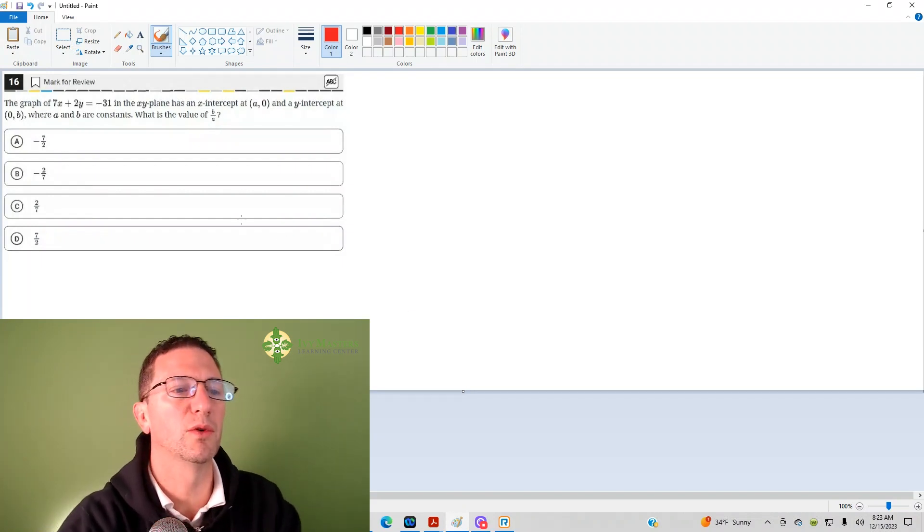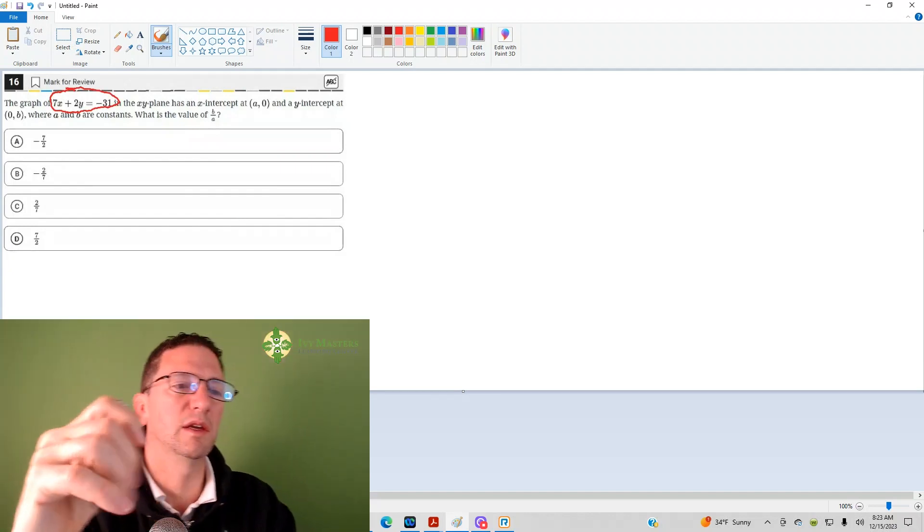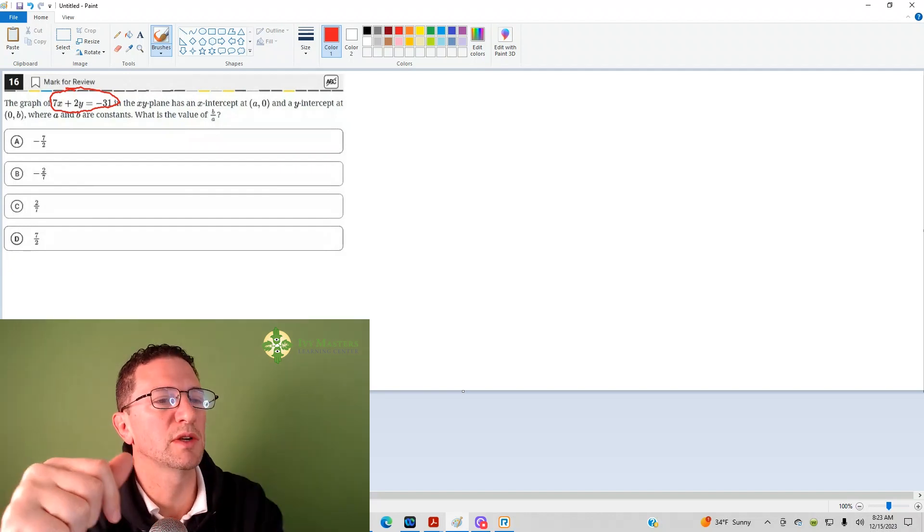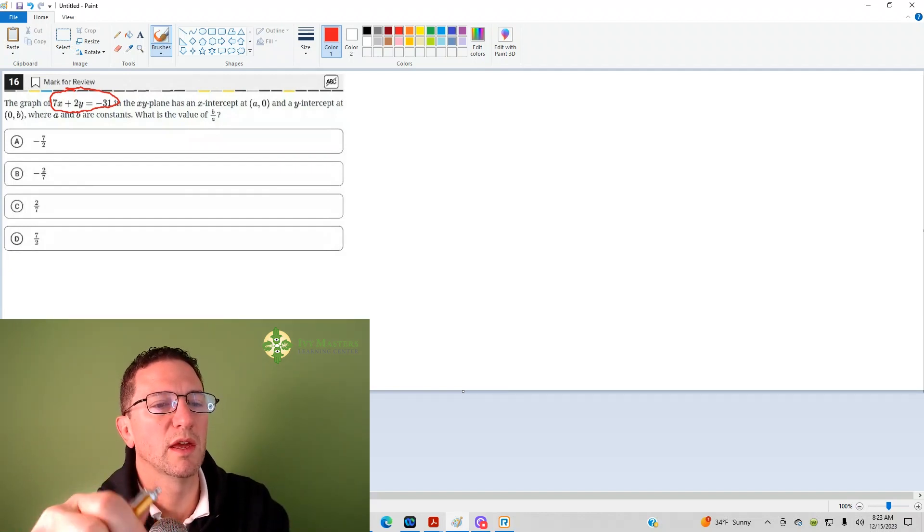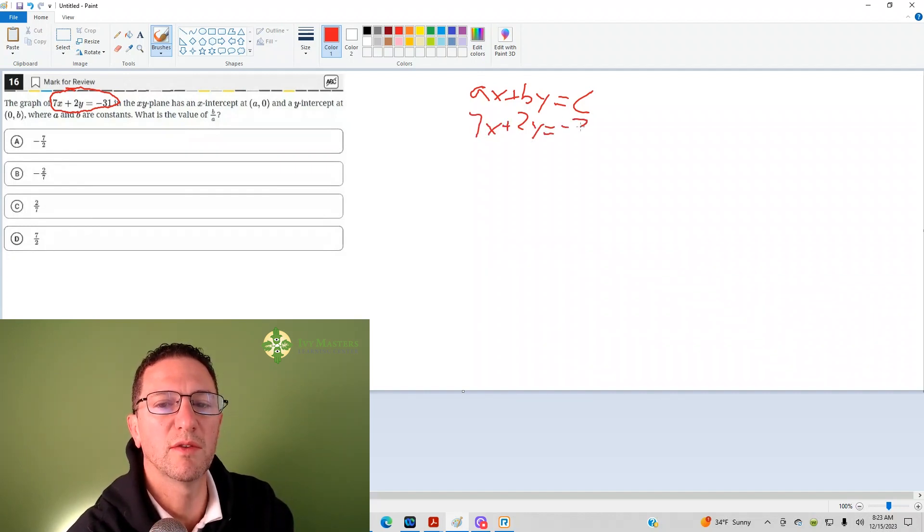So when you're in this form, when you're in standard form of the linear equation, 7x plus 2y equals negative 31, and it's asking you essentially what it's asking you is the y-intercept over the x-intercept, it's going to have an inverse relationship with the coefficient of that.